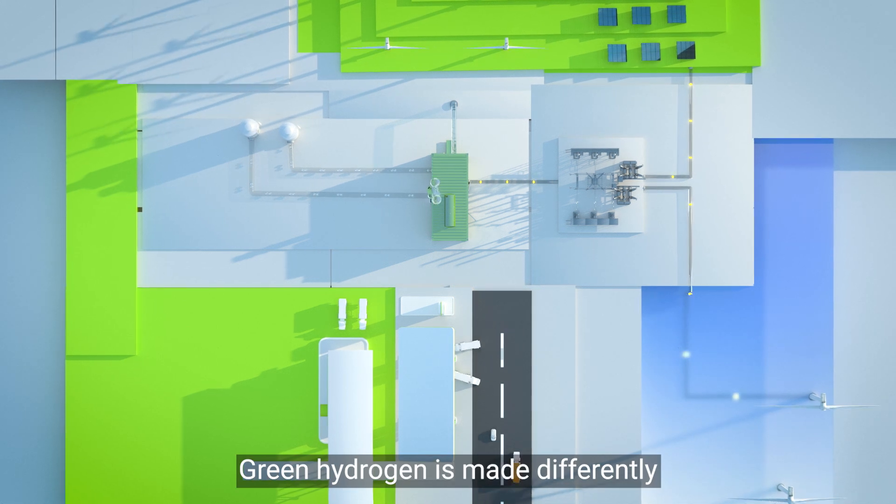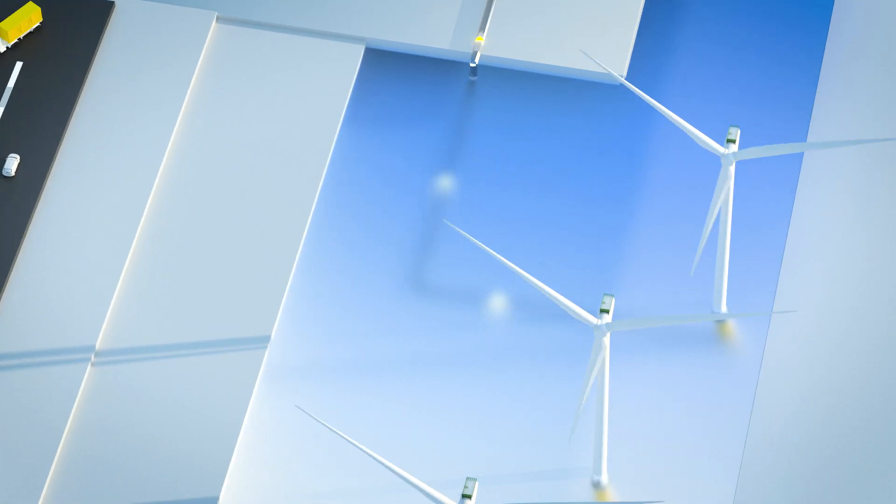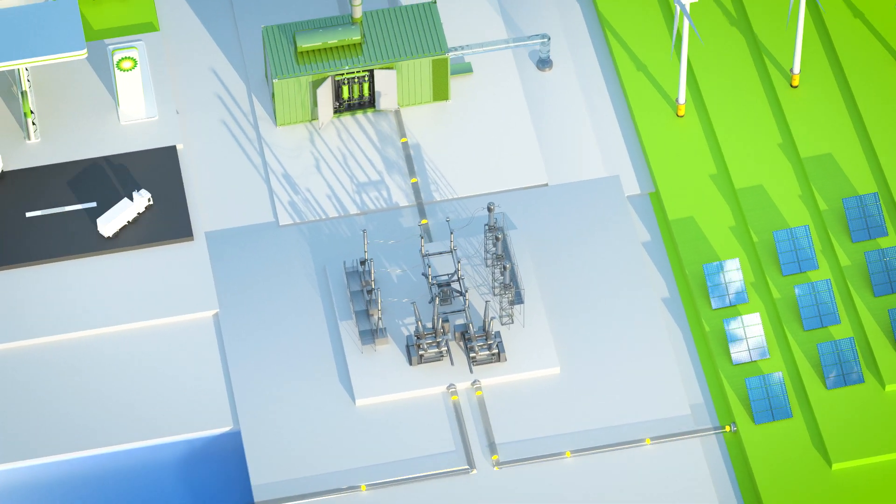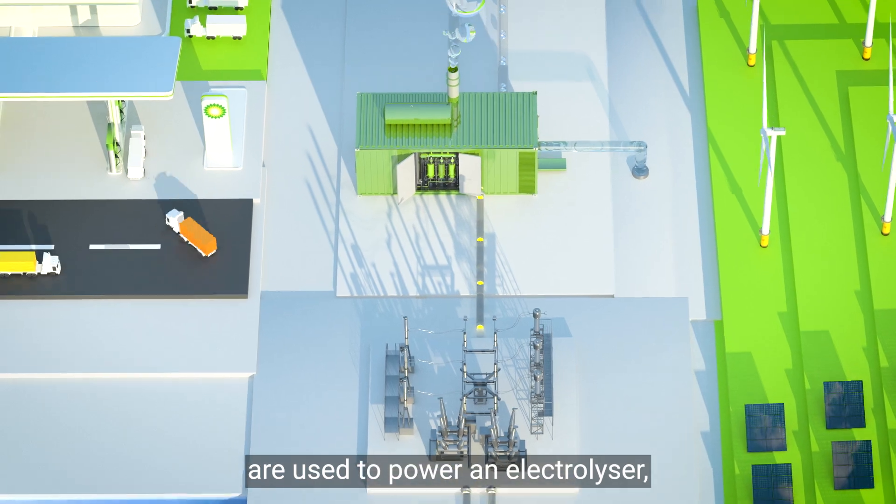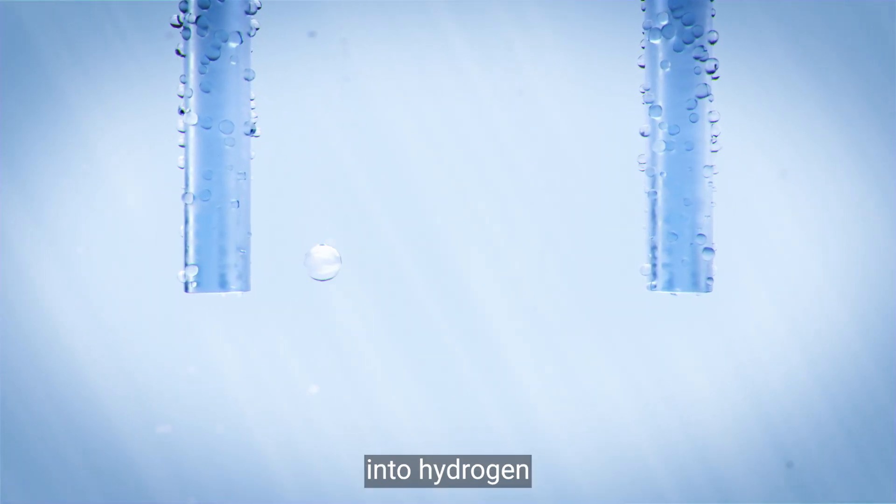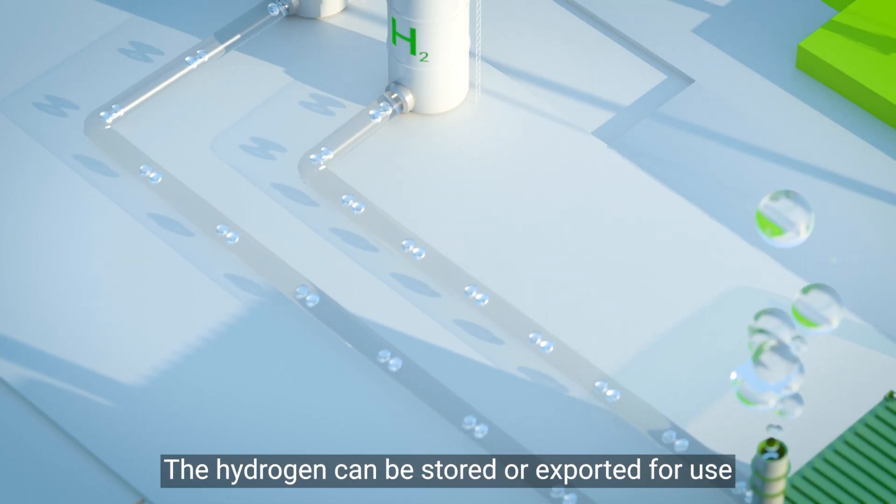Green hydrogen is made differently through a process called electrolysis. Sustainable energy sources like wind and solar are used to power an electrolyzer, where an electric current splits water into hydrogen and oxygen. The hydrogen can be stored or exported for use.